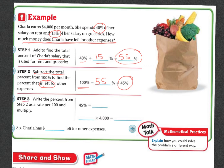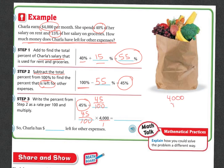Now step three: write the percent from step two, which is 45, as a fraction — 45 over 100. Multiply that times her salary of $4,000. So we have 45 over 100 times 4,000 over 1. That's going to be a big number, but we can cross-multiply: 100 goes into itself one time, and 100 goes into 4,000 forty times.